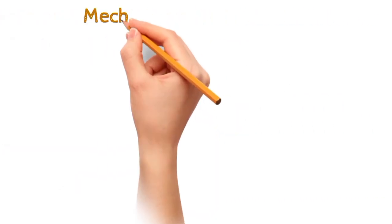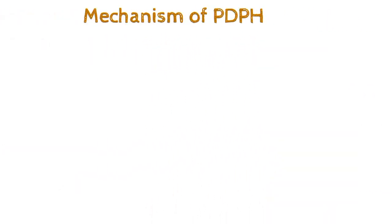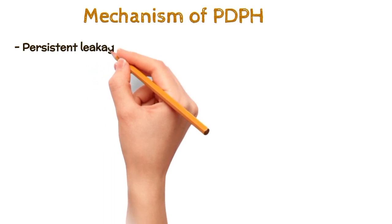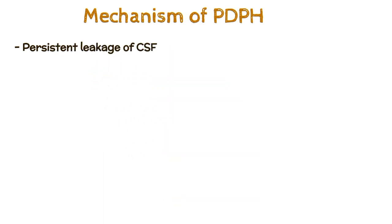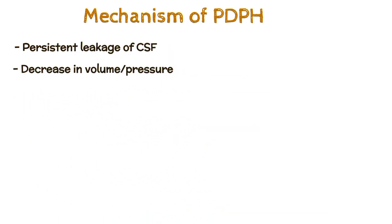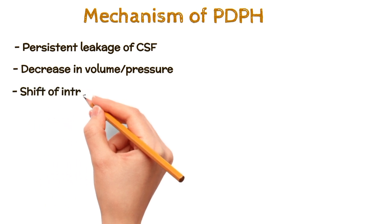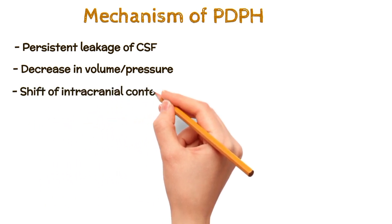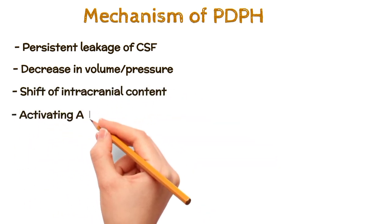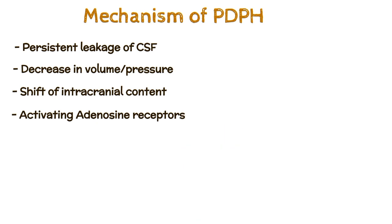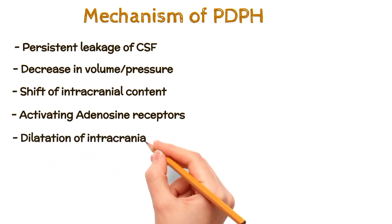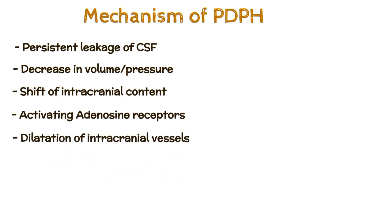Mechanism of PDPH: persistent leakage of CSF leads to a decrease in volume or pressure, causing a shift of intracranial content, activating adenosine receptors, and resulting in dilatation of intracranial vessels.